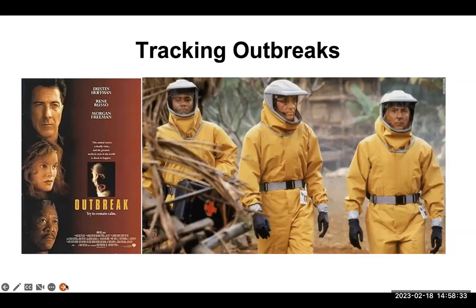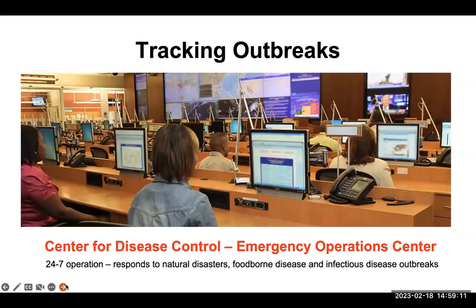In terms of tracking outbreaks, there's a well-known movie from about 20 years ago called Outbreak, starring Dustin Hoffman and Morgan Freeman, about an Ebola-like virus that escaped from a monkey colony and ended up in America. Inspired by that perhaps, the Center for Disease Control, or CDC, based in Atlanta, has set up an emergency operations center that looks not unlike the one in the movie. It has a giant screen, everyone has computers, it kind of looks like mission control for NASA. It works 24/7, responds to infectious disease outbreaks, foodborne diseases, and natural disasters, and tracks things in real time. It's probably the most elaborate system anywhere in the world for outbreak tracking.